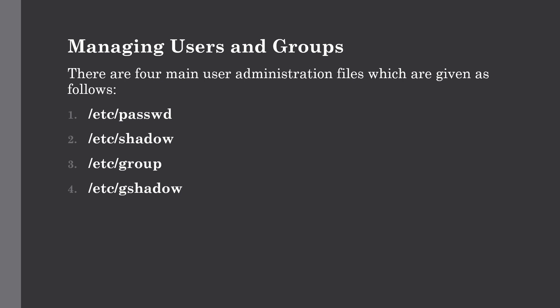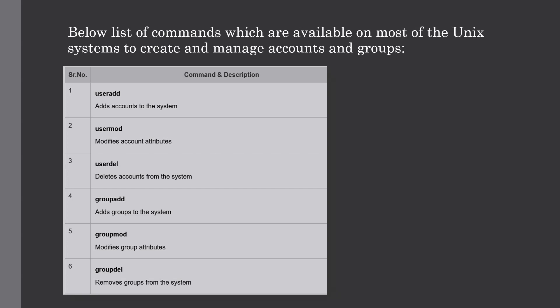You can check all these files using the cat command to get more details about their contents. Here is a list of commands available on your Unix system for creating and managing accounts and groups. The useradd command is used for adding an account, usermod modifies account attributes, and userdel deletes the account. groupadd is used for adding a group, while groupmod and groupdel are used for modifying and deleting groups respectively. You can use the man page help for checking the complete syntax of each command — we also have a dedicated video for man page help in our Unix playlist.